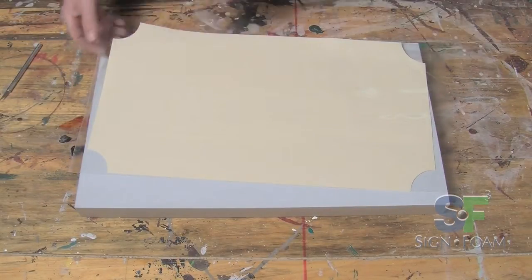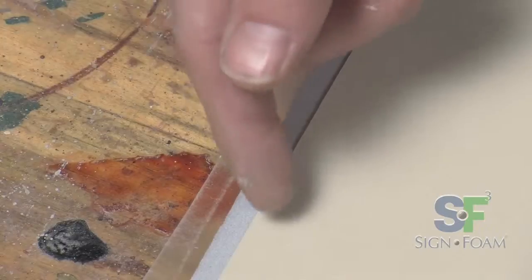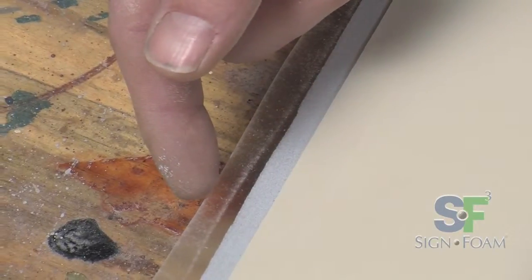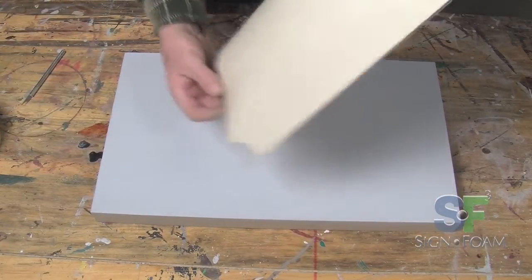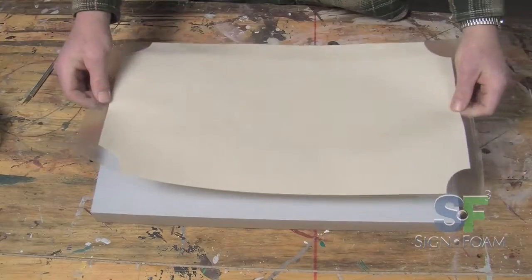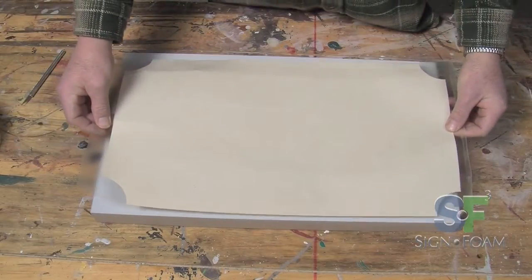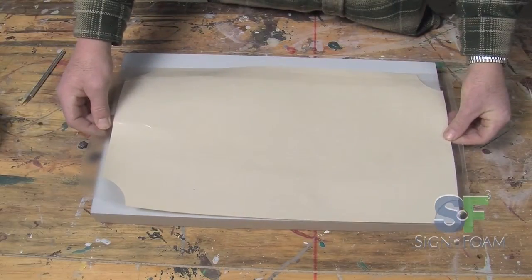When trimming the transfer tape, leave an inch or so on either side to give you room to handle the stencil. Next, flip over the stencil, sticky side down and get ready to position it over the signfoam. Place it parallel to the bottom and even with the outside edge.